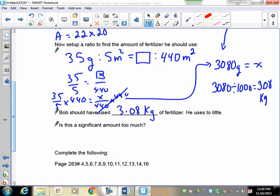All right, he should have used 3.08. But let's take a look at this for a second. 3.08 kilograms of fertilizer. Remember that we're talking about 80 gram difference here.